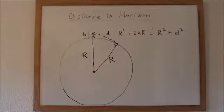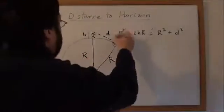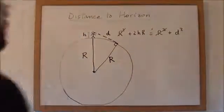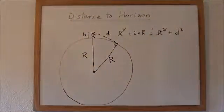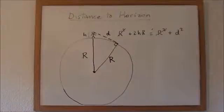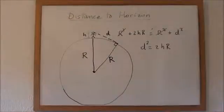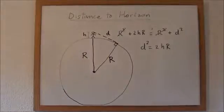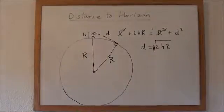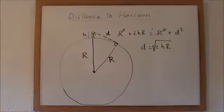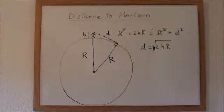Now, we have R squared on both sides. Cancel those out and we solve for d. d squared equals 2hR, which means d equals square root of 2hR. That is, the distance to the horizon equals the square root of twice our height times the radius of the earth.